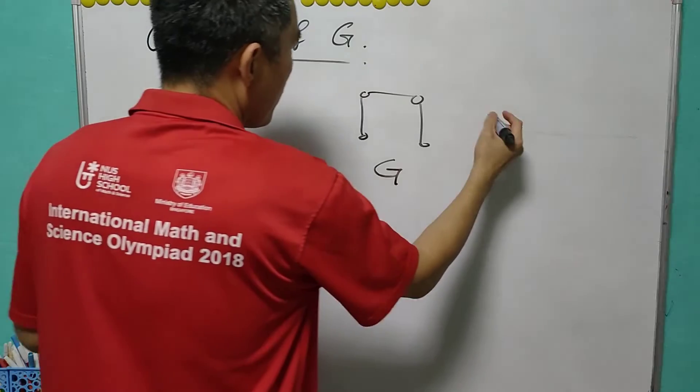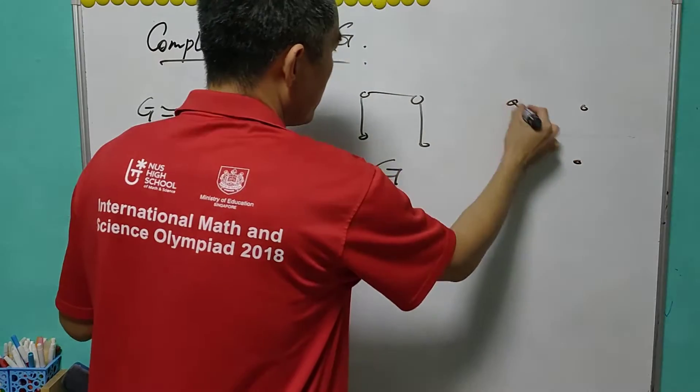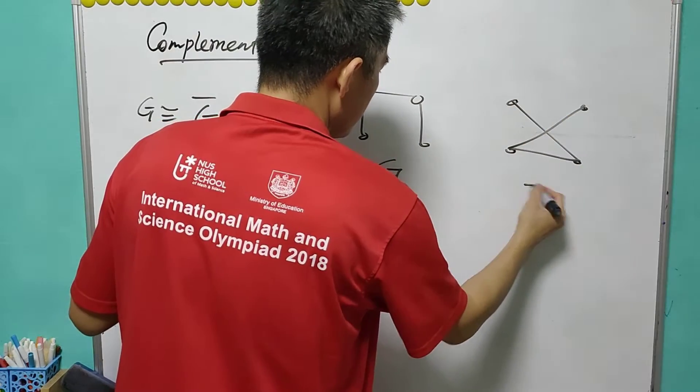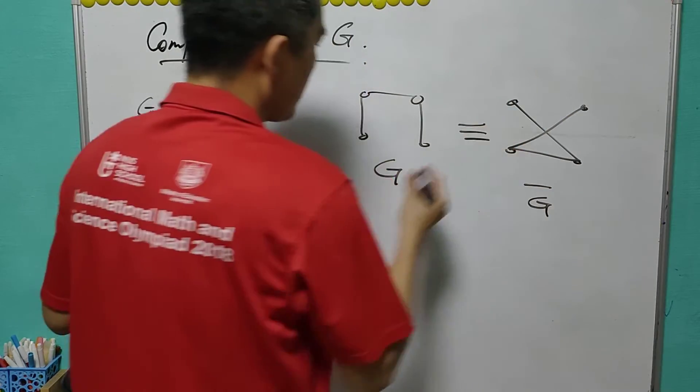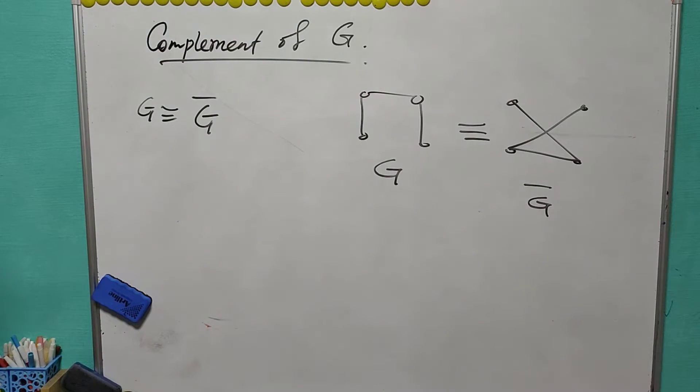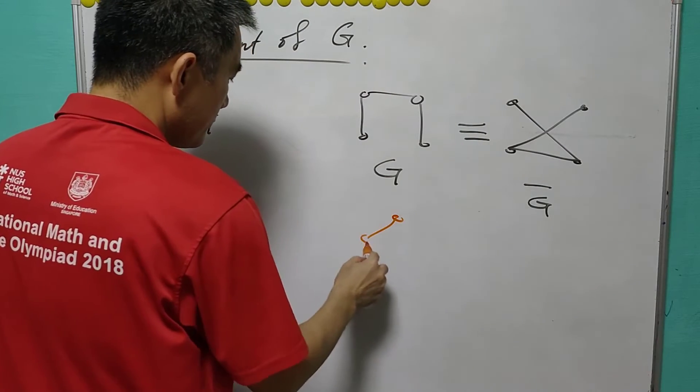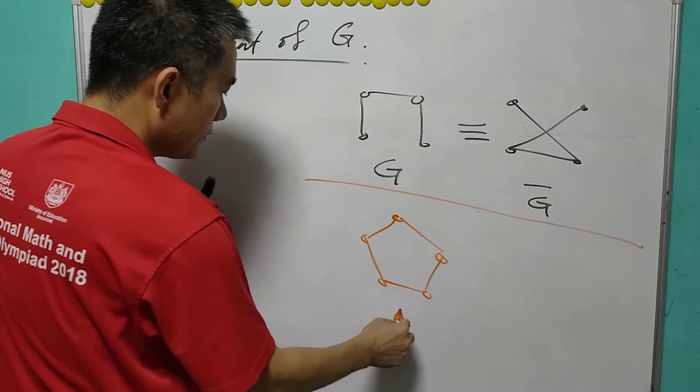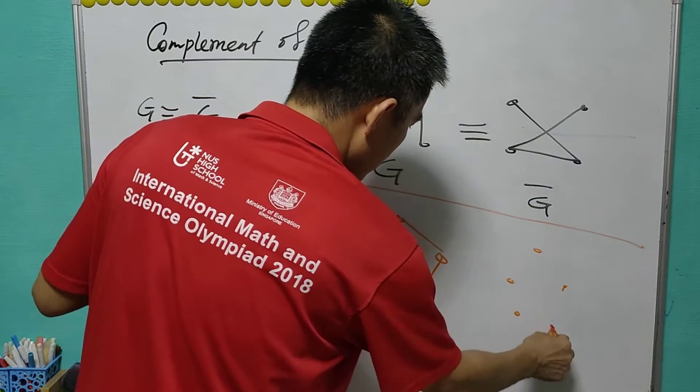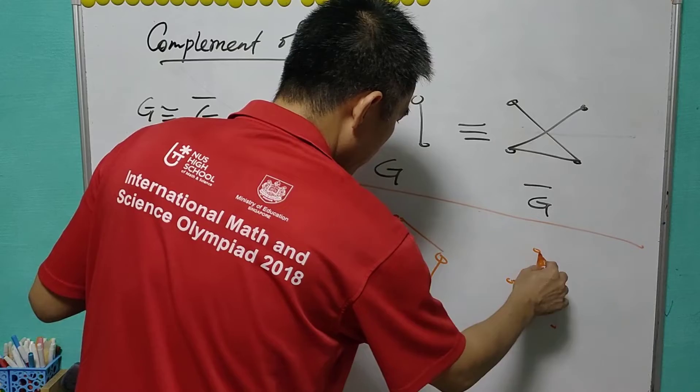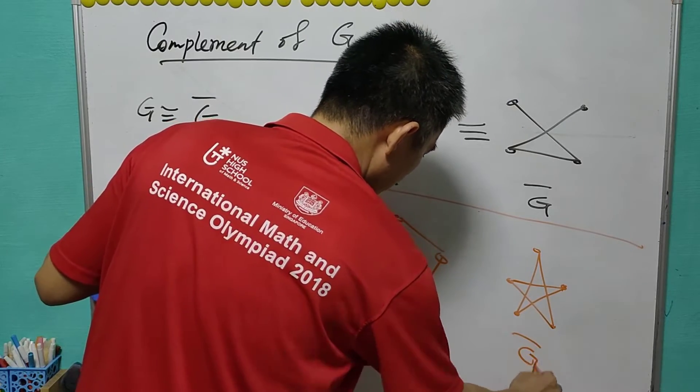We have two examples where G equals to G bar in this case. For G bar, it goes to this, and you can see that they are isomorphic. The next example will be a five cycle G, and the other one will be a five cycle as well, and they are isomorphic.